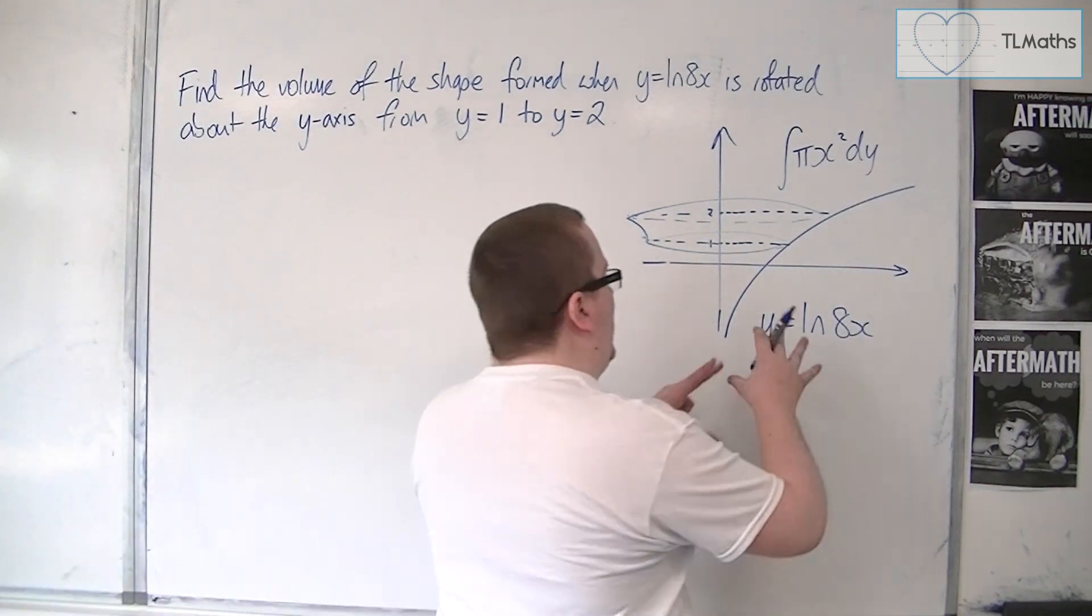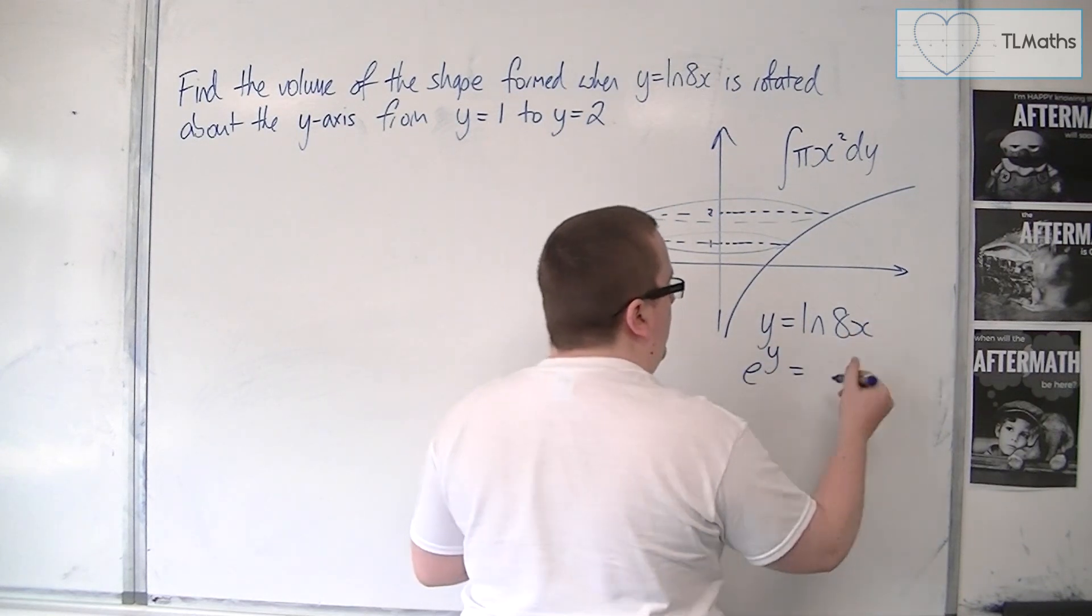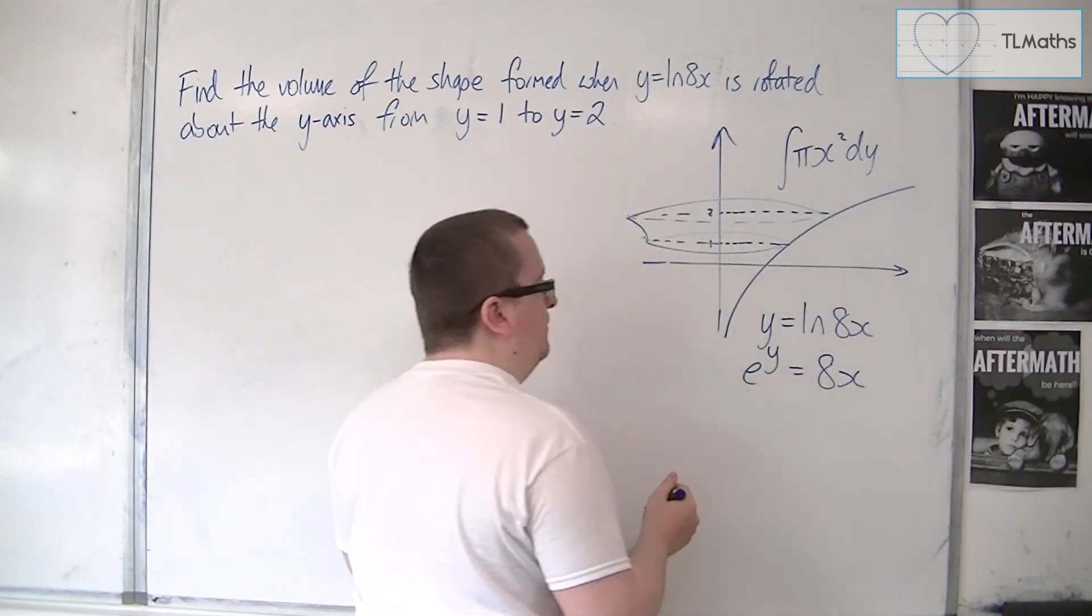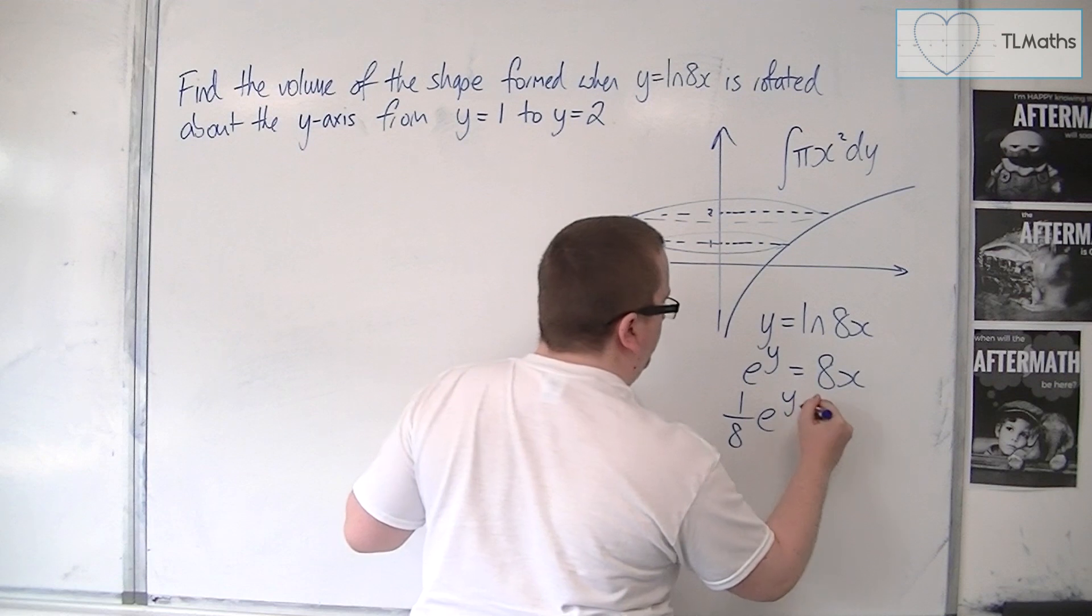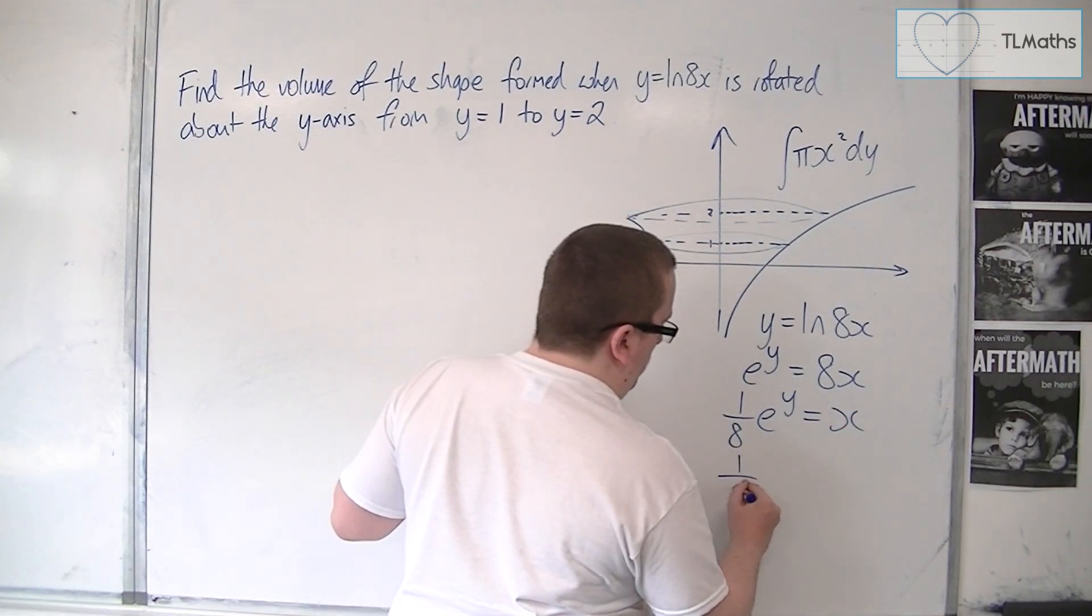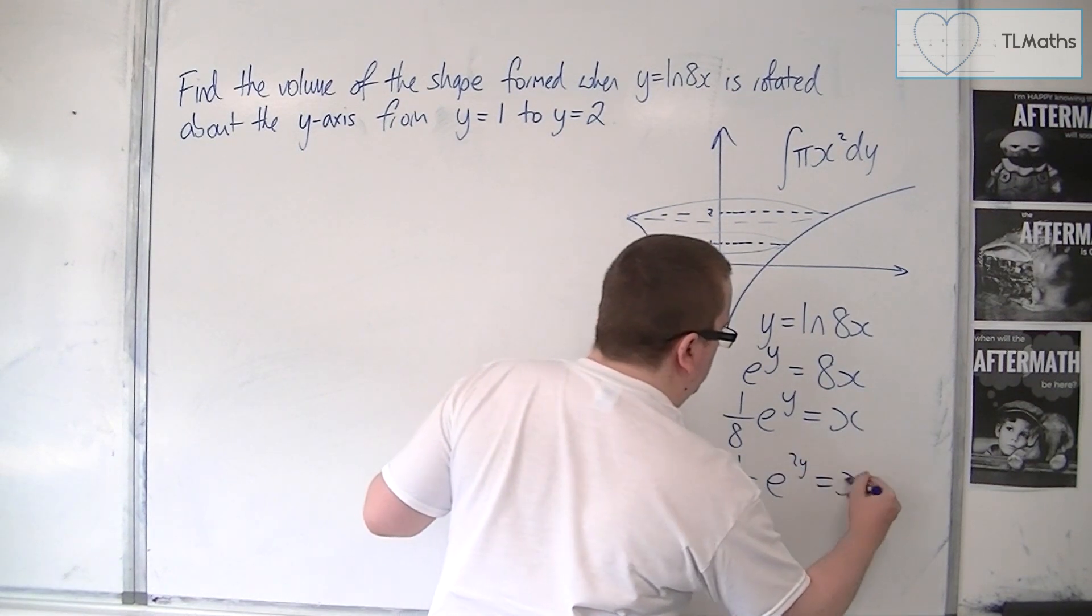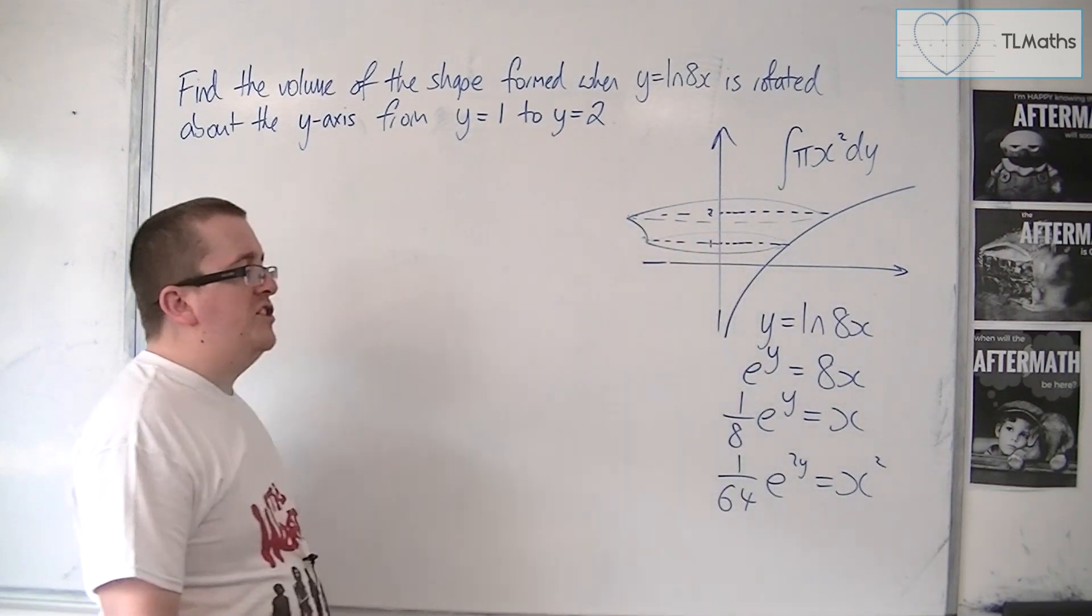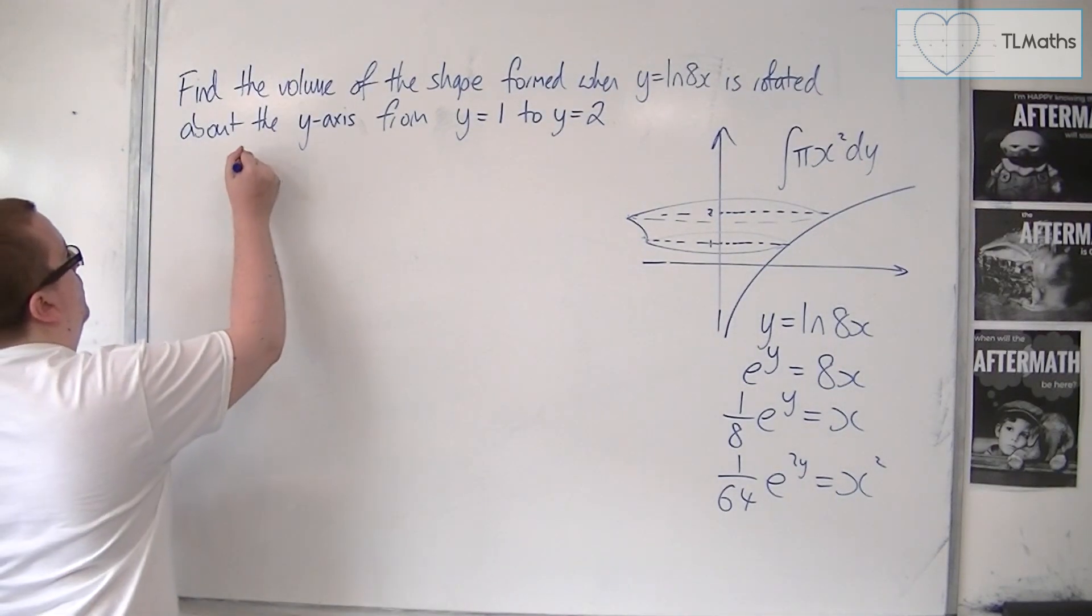So we're going to have to e both sides, so get e to the y equals e to the log 8x, which is just 8x. Then we're going to have to divide both sides by 8. And so x squared will be 1 over 64 e to the 2y by squaring both sides.